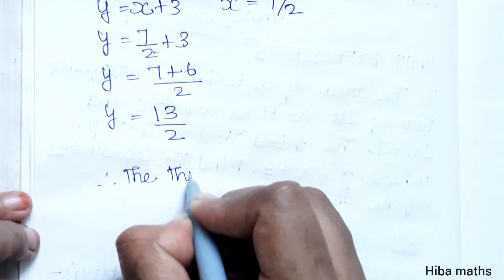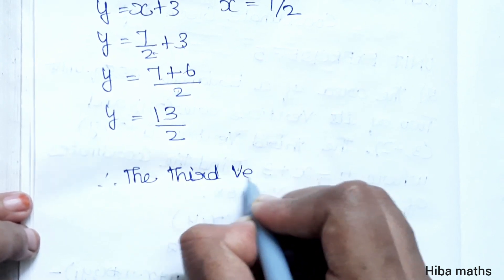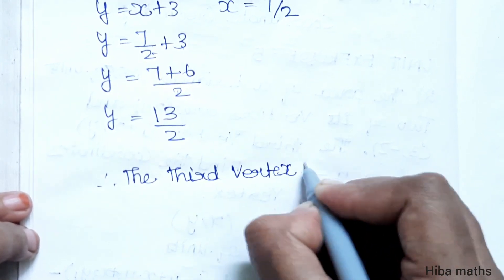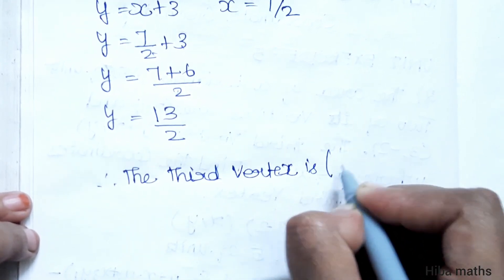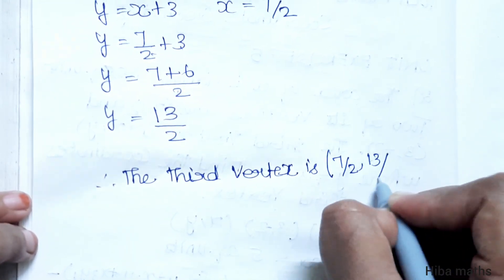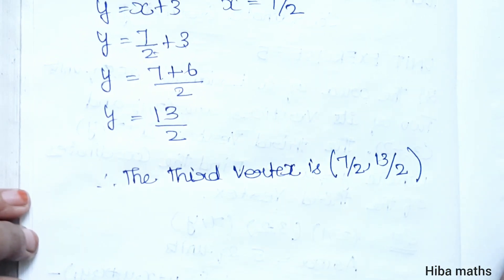Therefore, the third vertex is (7/2, 13/2). I hope you all understand. Thank you so much for watching.